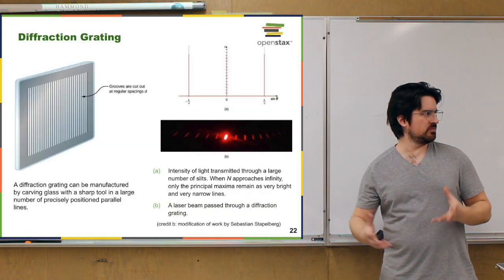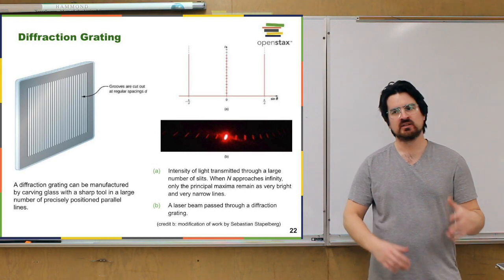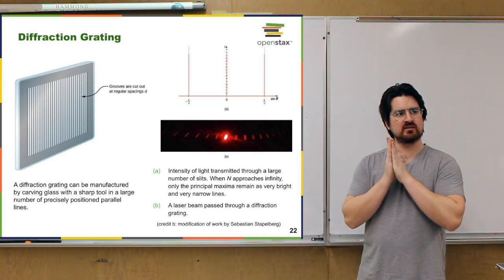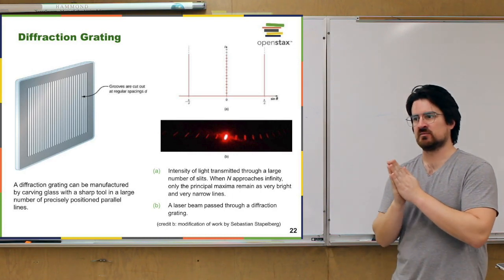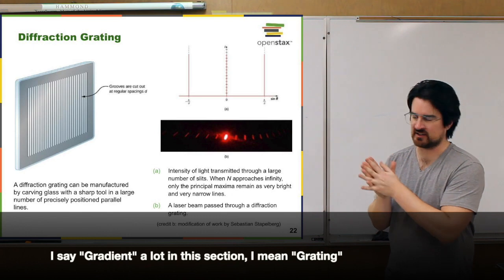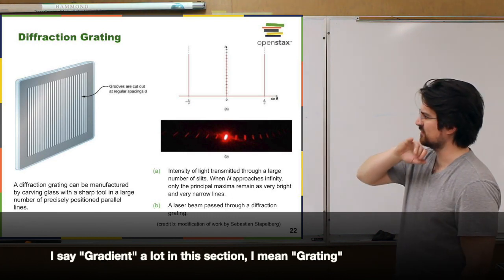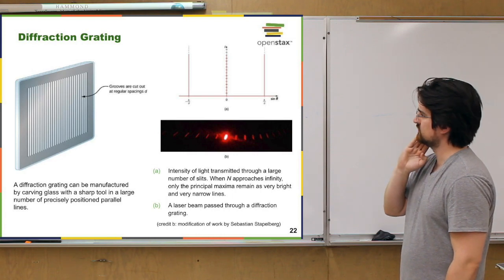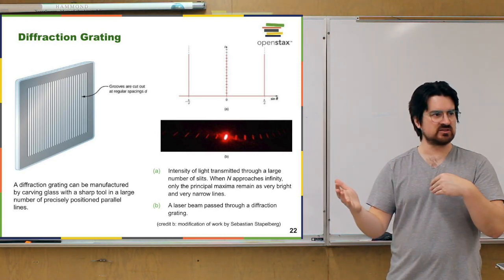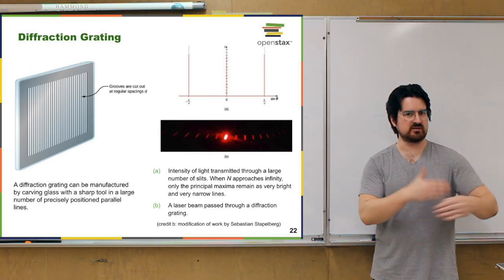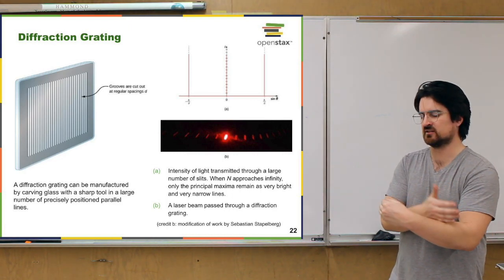Now we know a bit more about what happens when light goes through a slit — you get diffraction. In terms of applications, one slit is not as useful, but if you have an instrument with many, many slits in it, it can become quite useful. That kind of object is called a diffraction grating — essentially just something with a bunch of slits in it, like grooves cut into a big glass. It's like overlapping multiple slits from the Young double-slit picture. With many slits, combining our understanding of single slit diffraction and adding all those slits together.